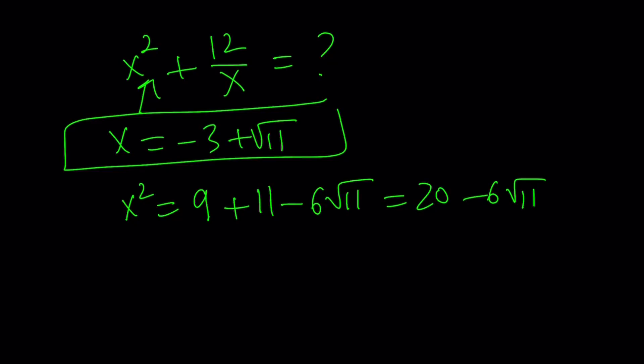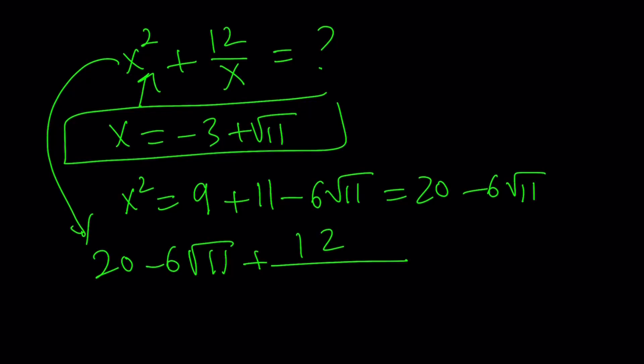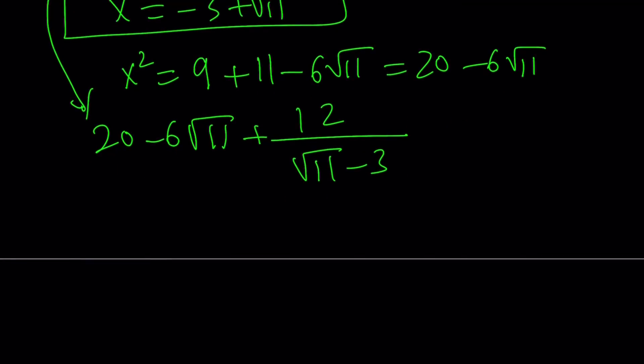And then I need to find out to that, remember, I'm trying to evaluate this. To that, I need to add 12 divided by x, which is negative 3 plus root 11. Can I write it as root 11 minus 3? Because I'm going to use the conjugate and I just want to write it in a nicer form. Okay.